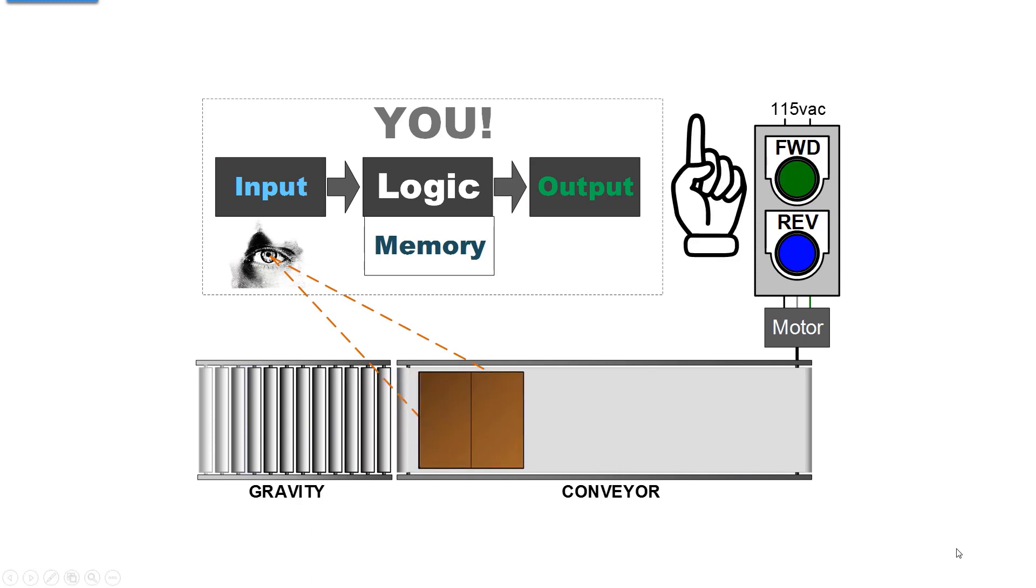Keep in mind that you did not stop the conveyor with your finger. Your muscle reaction released the forward button that opened a contact to remove electricity from the motor. The motor de-energized and the conveyor stopped.